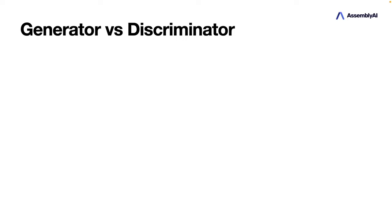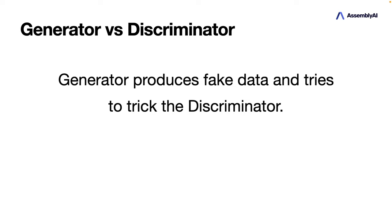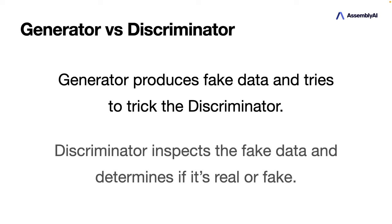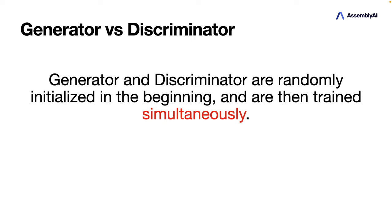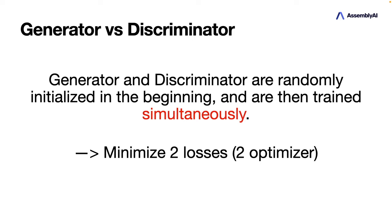The two networks are called the generator and the discriminator. The generator produces fake data and tries to trick the discriminator, and the discriminator inspects the fake data and determines if it's real or fake — so this is like a detective. They play against each other, and this is basically the training. They are initialized randomly and then trained simultaneously, which means we have to minimize two losses and use two optimizers.